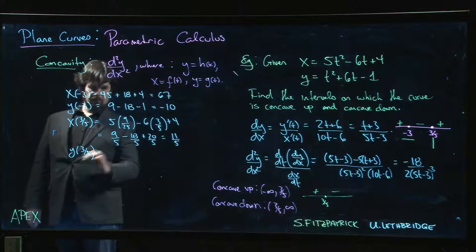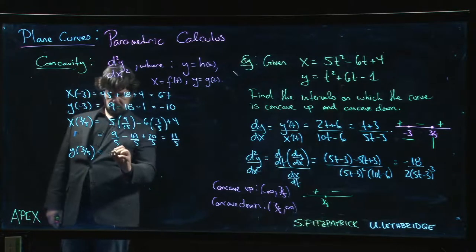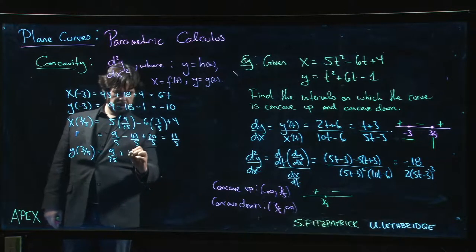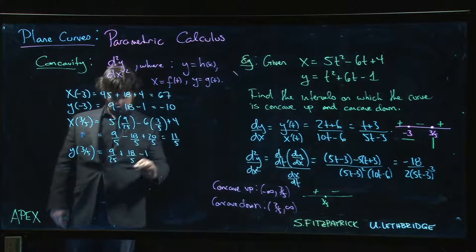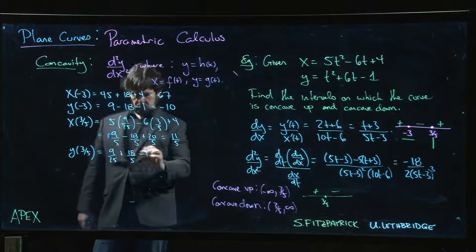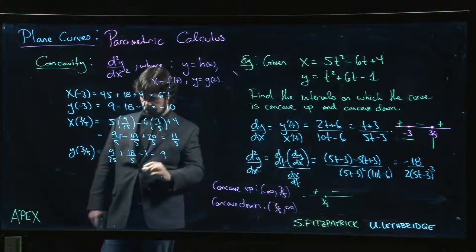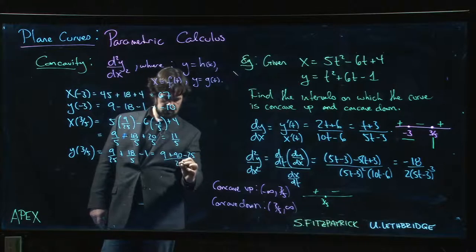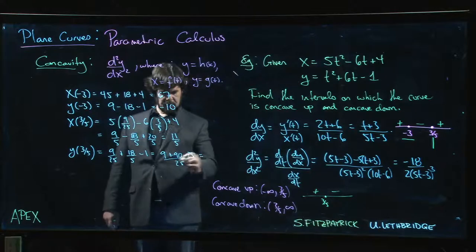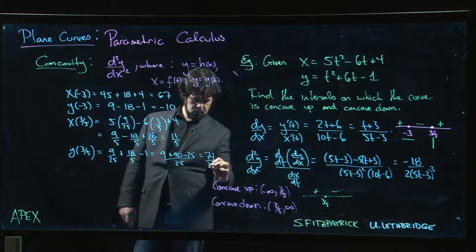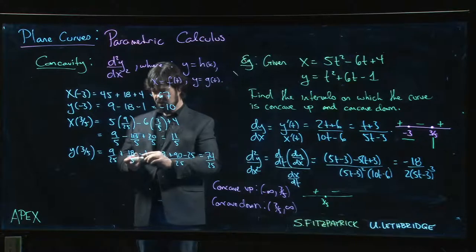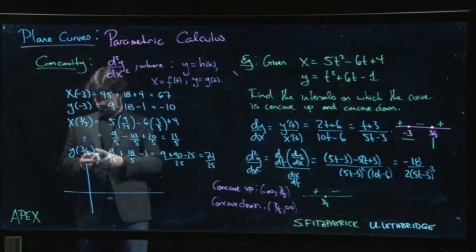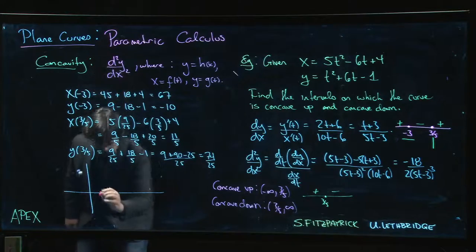y at t = 3/5, I'm going to have 9/25 + 6 times 3/5, so 18/5 - 1. All over 25, that's 9 + 90 - 25 over 25, 99 - 25, so 74/25, slightly less than 3.